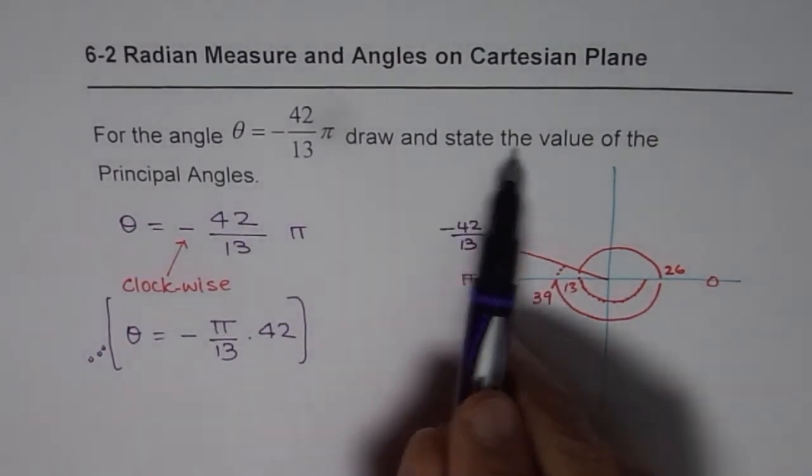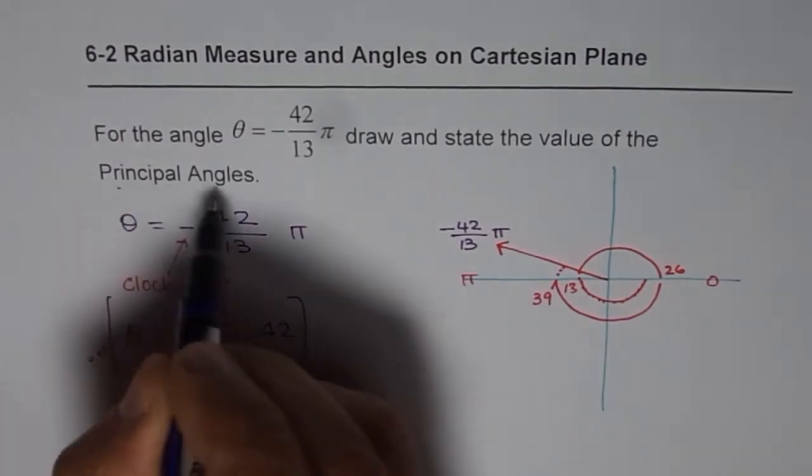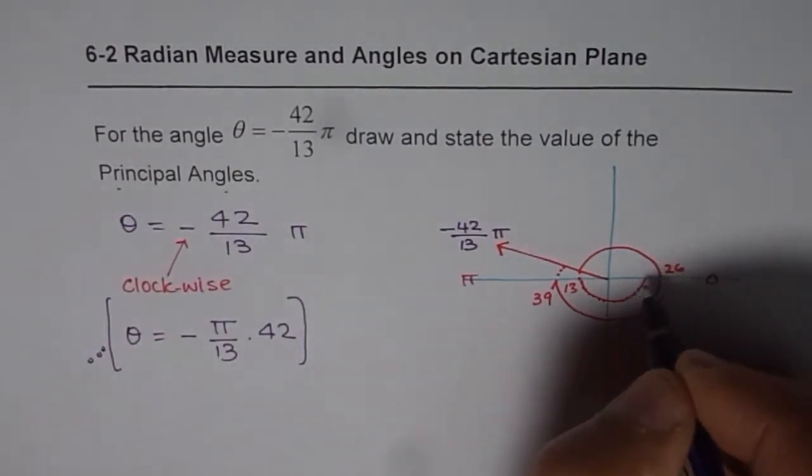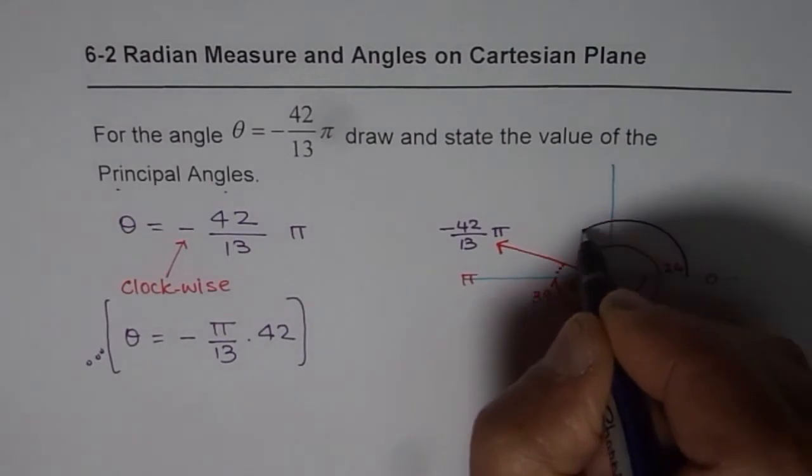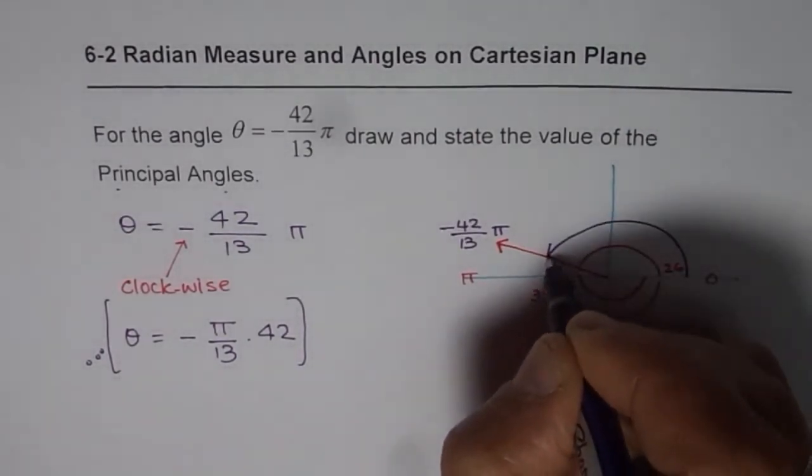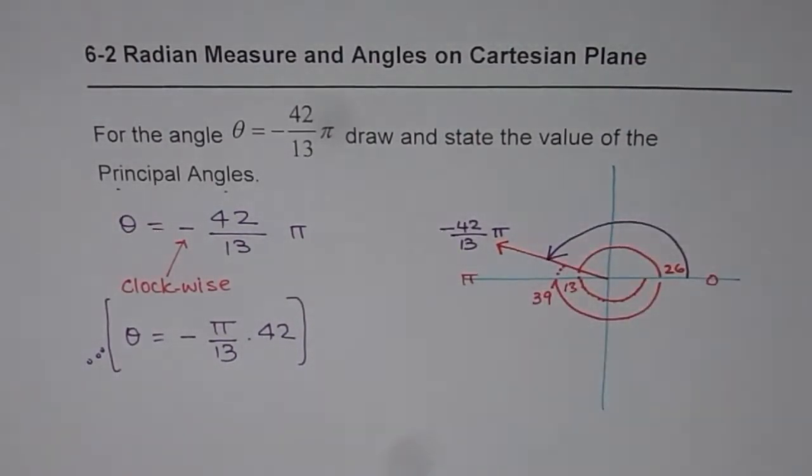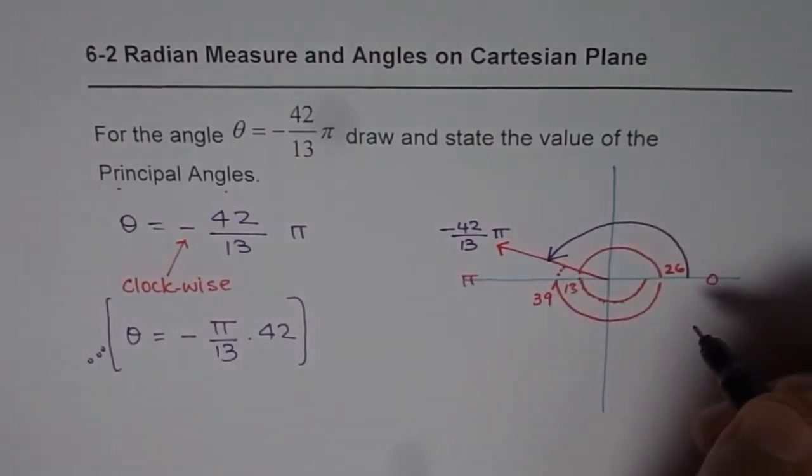Now we need to state the value of principal angle. Principal angle is always measured from positive x-axis counterclockwise to the terminal arm. So that is the angle which we have to state.